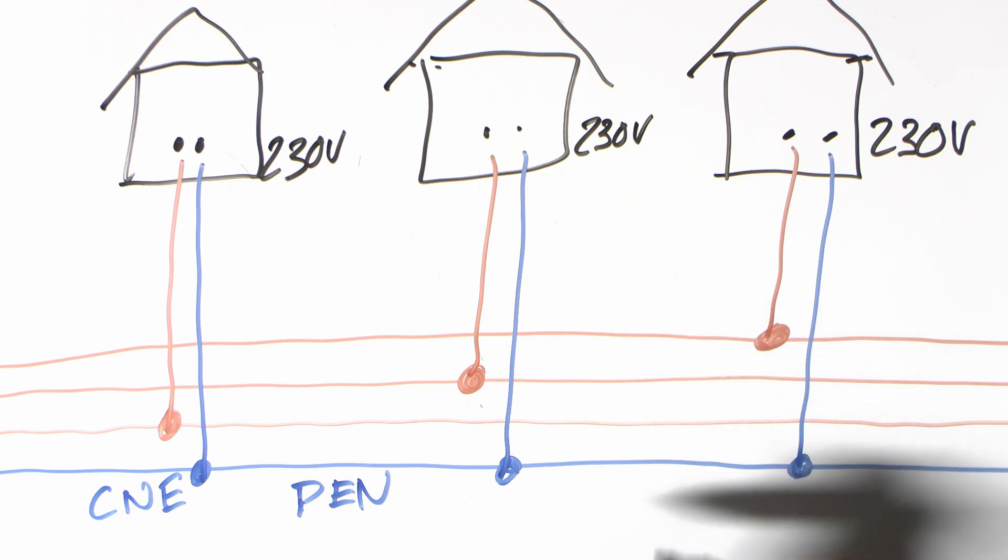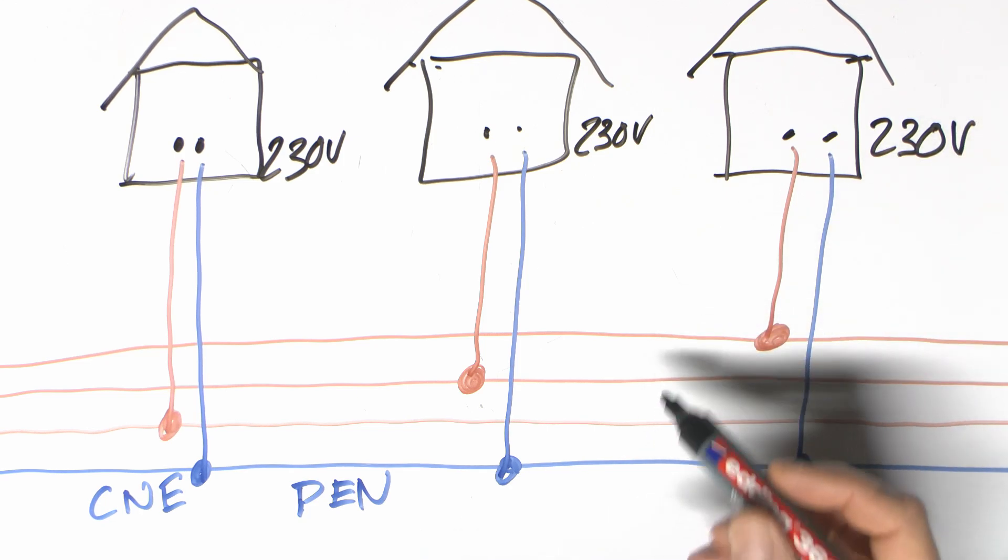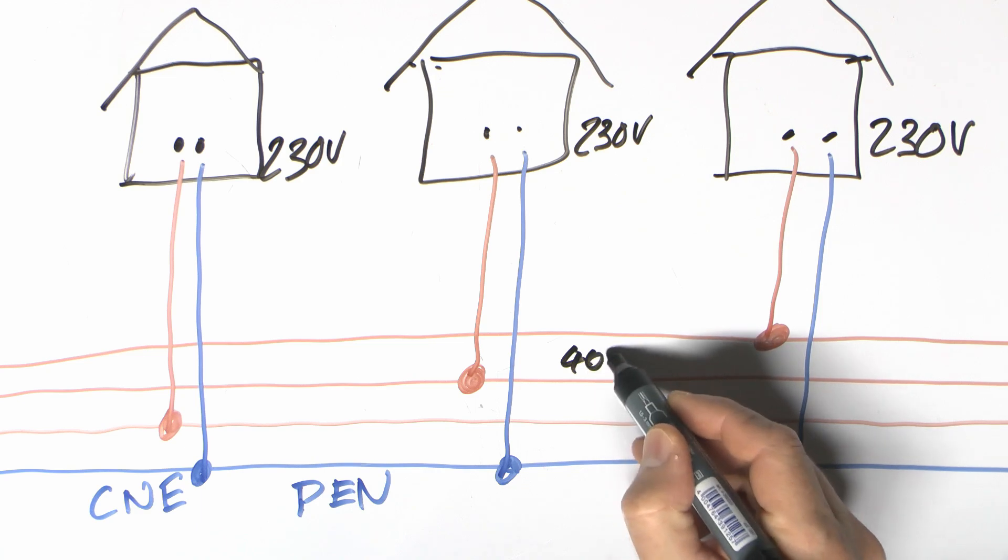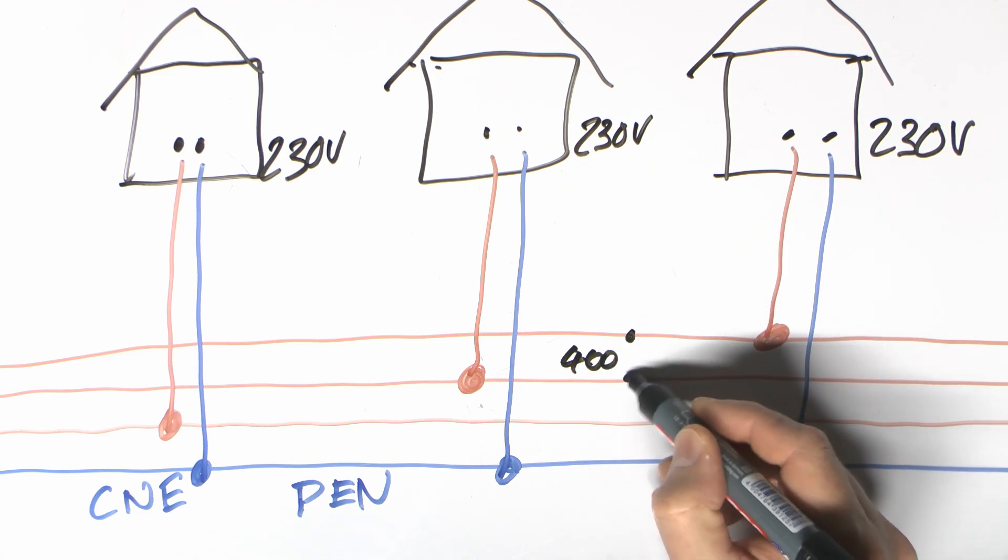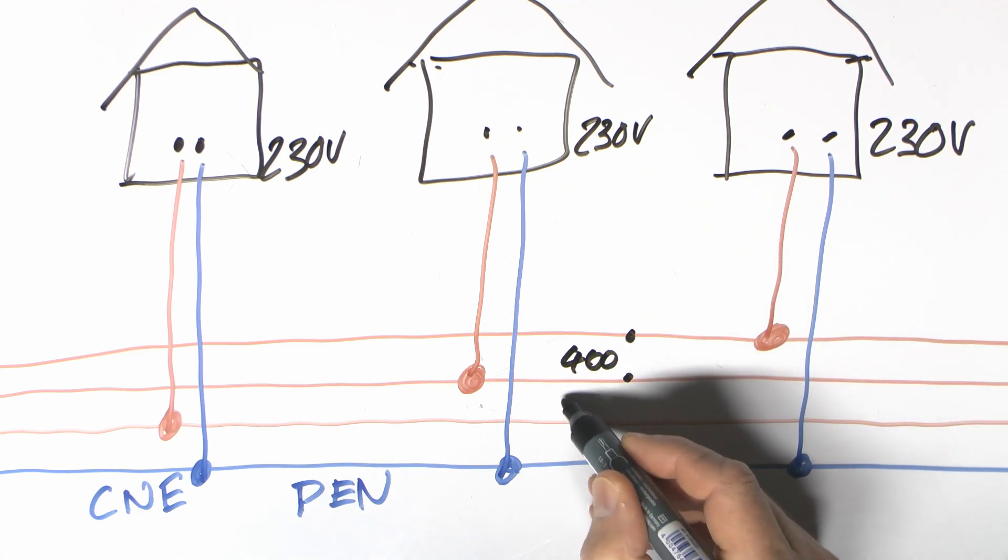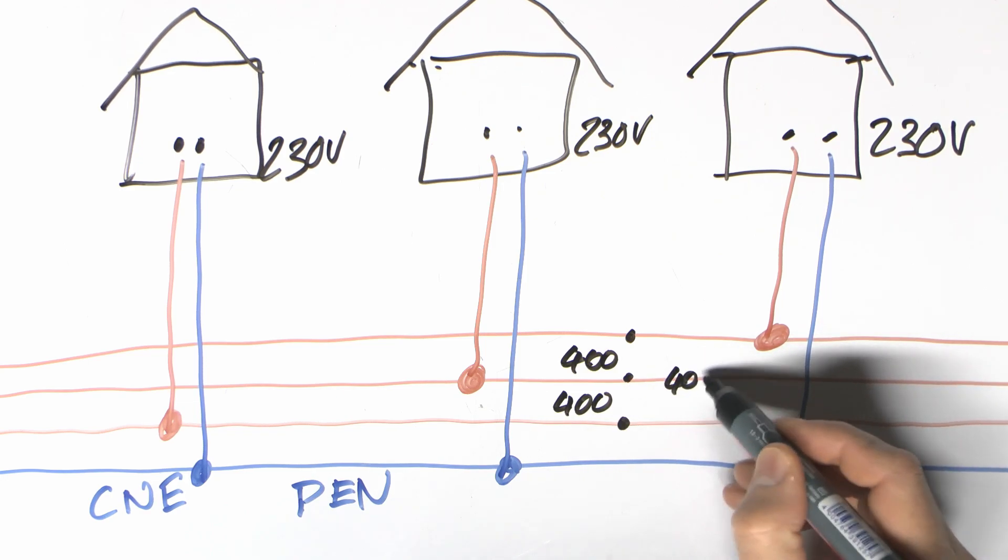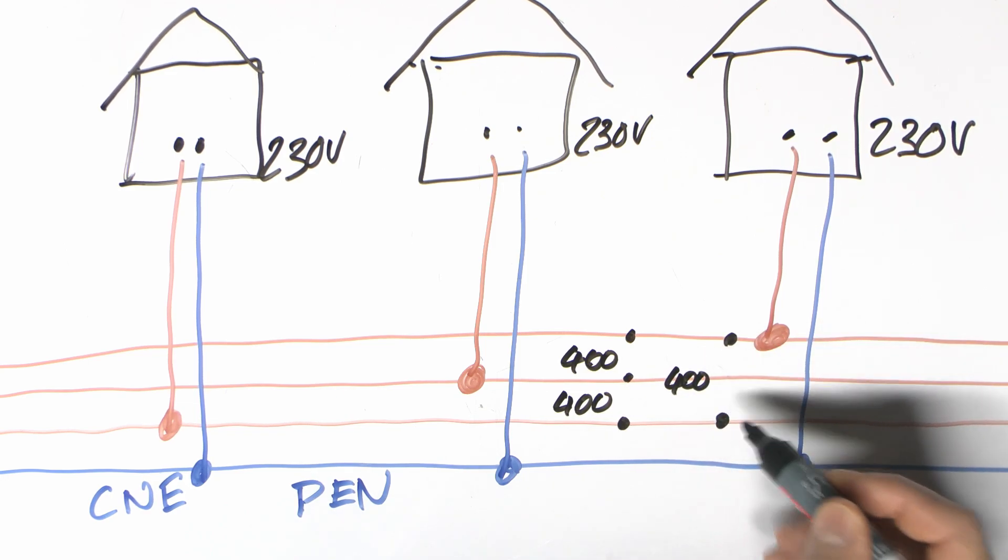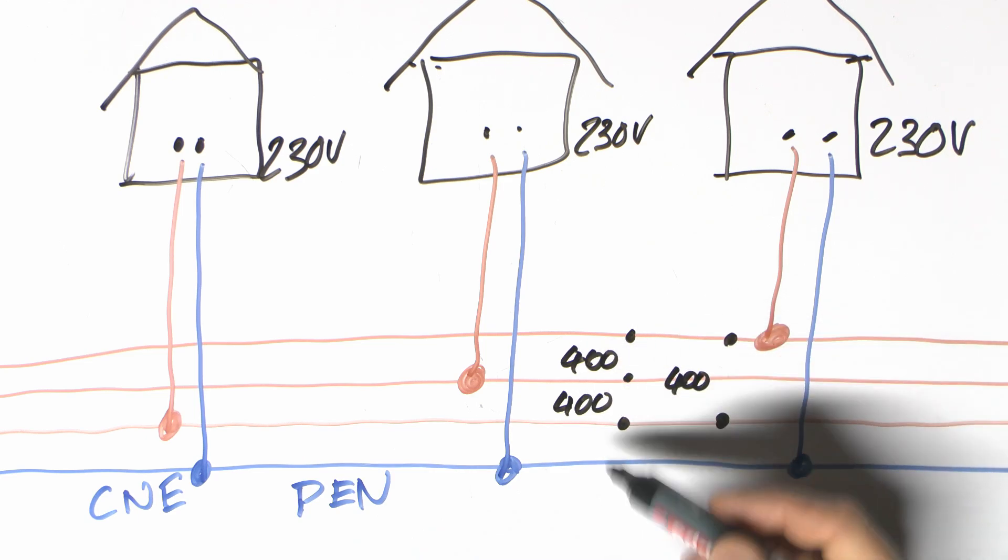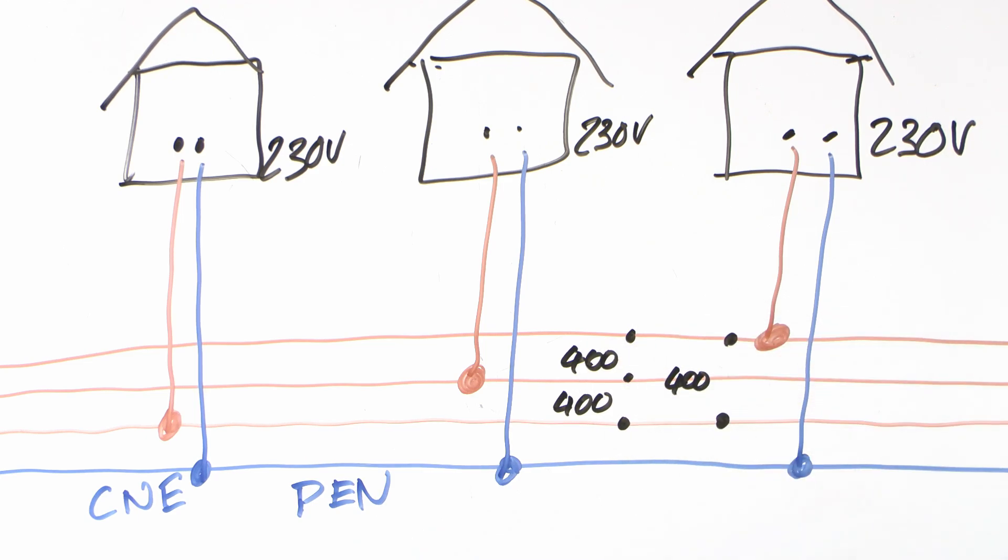They come from the same transformer, but these three are 230 volts relative to the neutral and the earth conductor in this case combined. And that would also be 230 volts relative to the general mass of earth as well. But between each of these is not 230 volts. It's actually 400. So you've got 400 between those two. You've also got 400 between those two like that. And you've also got 400 between the other two. So any two of those, it's 400 volts between all of them.